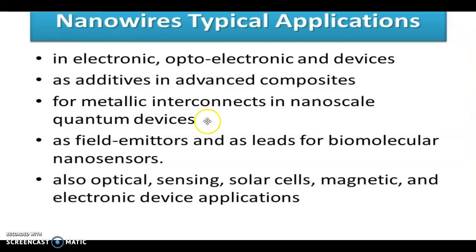Some typical applications of nanowires are in electronics — that is, optoelectronic devices. They are also used as additives in advanced composites to obtain different properties, for metallic interconnects in nanoscale quantum devices, for interconnections of metallic structures at the nanoscale, and as field emitters.